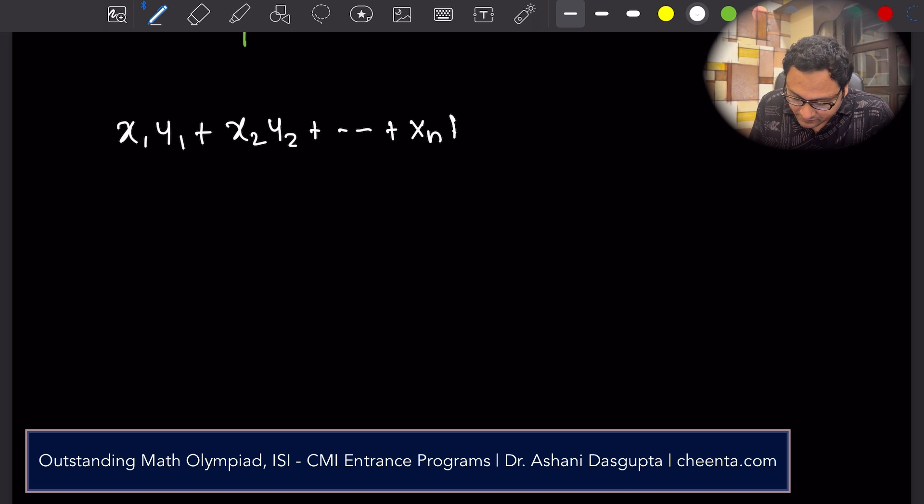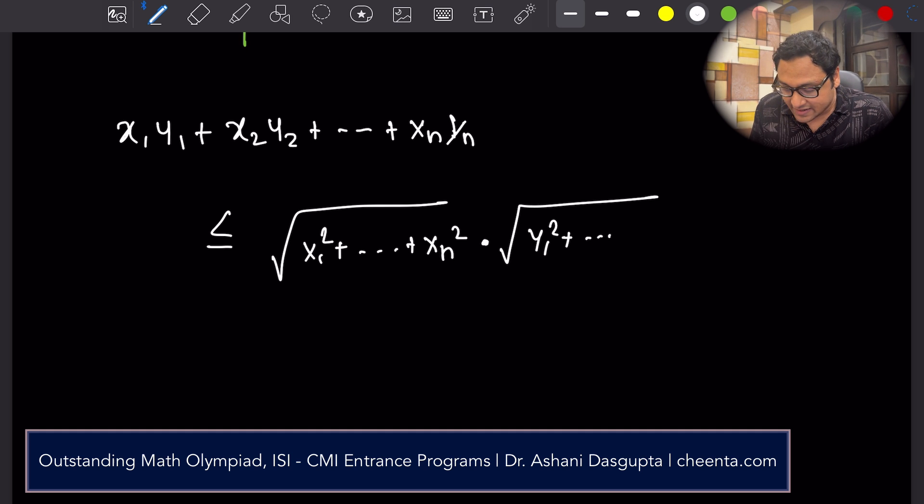is less than or equal to square root of x1 square up to xn square times square root of y1 square up to yn square. This is what the Cauchy-Schwarz inequality is about.